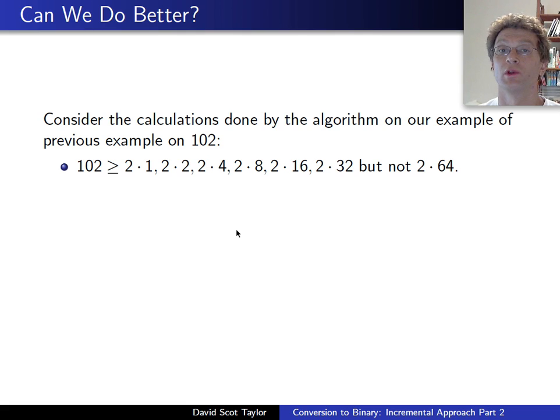So when you're calculating the largest power of 2 less than 102, you start by looking at 2 times 1, 2 times 2, 4, 8, 16, 2 times 32, and then finally when you look at the conditional is 2 times 64 less than or equal to 102, it's not. So you continue. That's fine.